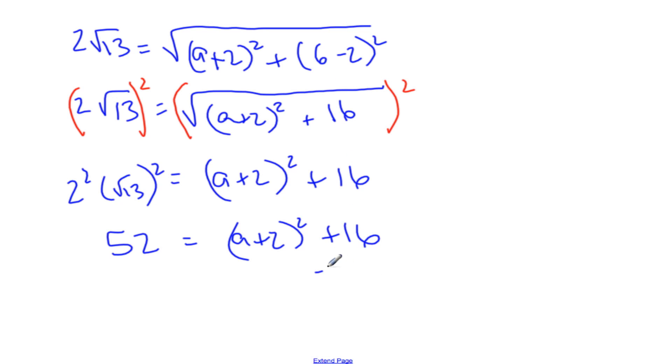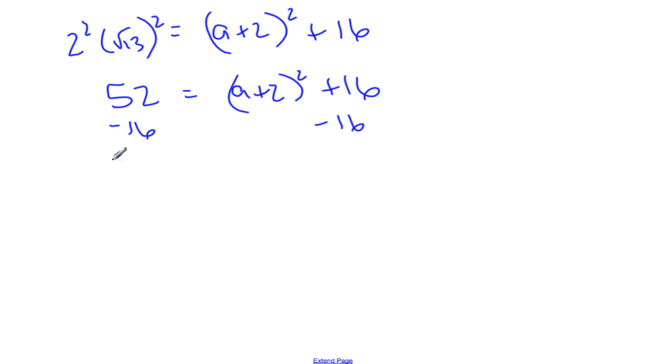I'm going to now subtract 16 from both sides. Because I'm trying to get A all by itself. Help me out here with 52 minus 16. 36. Yes. Nice square number. To get rid of it, I'm going to take the square root of both sides. But because I'm taking the square root, I have to do plus or minus. And so I have square root of 36 is plus or minus 6 equals A plus 2.